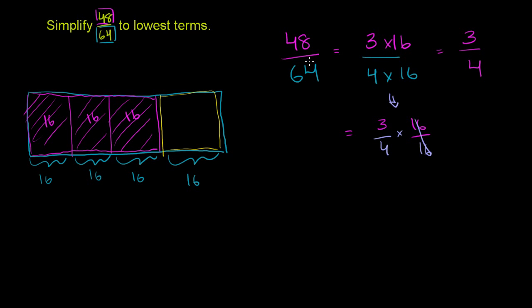Now if you didn't immediately recognize that 16 goes into both 48 and 64, you could do it step by step. So let's say we started off with 48 over 64. Now the key thing to remember with any fraction, whatever you do the numerator, you have to do the denominator. So let's say we divide the numerator. So if we divide the numerator by 2, we also have to divide the denominator by 2.